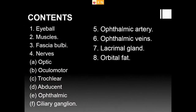The contents inside the orbit include: the eyeball, muscles of the eyeball, fascia bulbi, and nerves — optic, oculomotor, trochlear, abducens, ophthalmic, and ciliary ganglia. The vessels are the ophthalmic artery and ophthalmic vein. There is also the lacrimal gland. All structures are covered by a pad of fat called the orbital pad of fat.